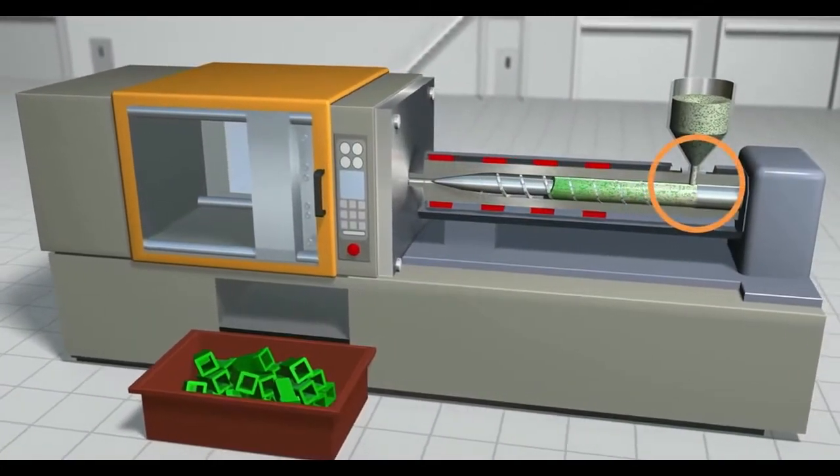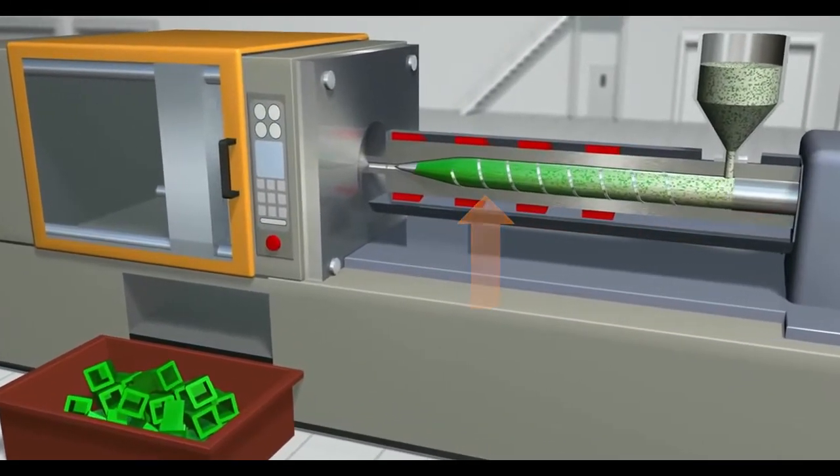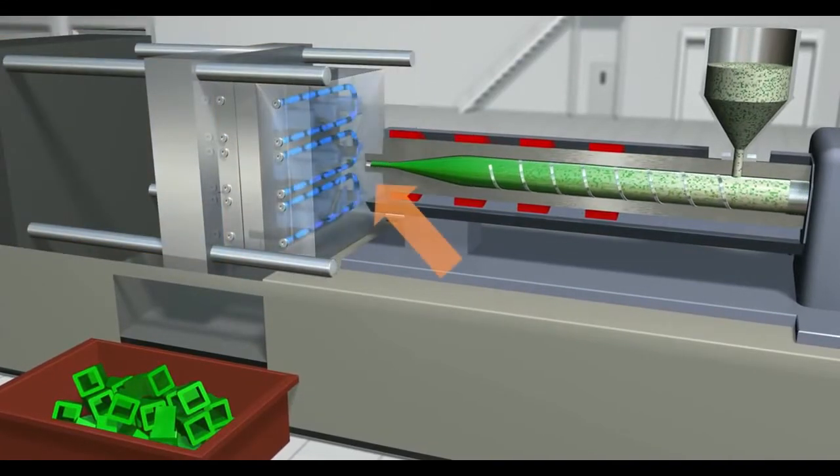Material gravity flows into the injection machine's screw where it is melted by the compressing motion of the screw and then injected into the mold to form the part or parts.